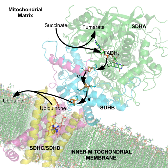Cofactors can be divided into two major groups: organic cofactors, such as flavin or heme, and inorganic cofactors, such as the metal ions Mg2+, Cu+, Mn2+, or iron-sulfur clusters.